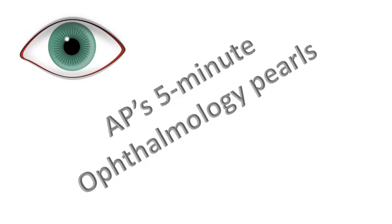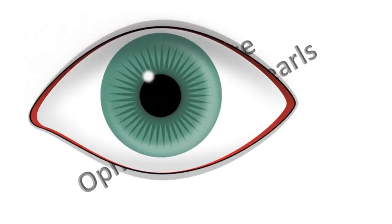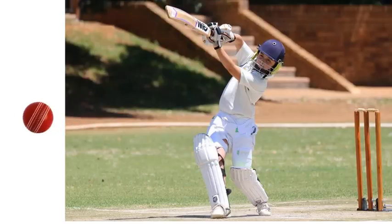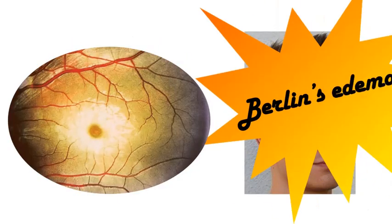Welcome viewers, welcome to AP's 5 Minute Ophthalmology Pulse — watch, understand and remember anything in ophthalmology in under 5 minutes. This is the first of a 3-part series on Berlin's edema. This video deals with the basics of Berlin's edema. The next video will deal with cherry red spot in detail, and the third part will deal with advanced details for postgraduate residents.